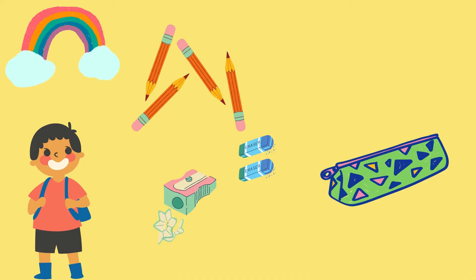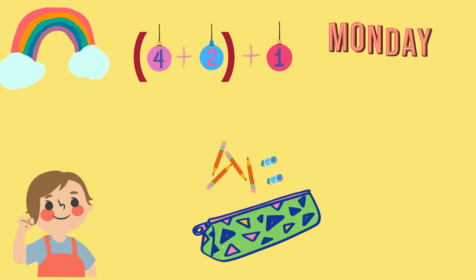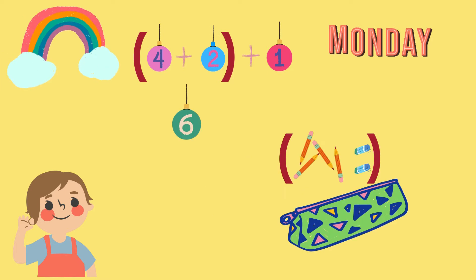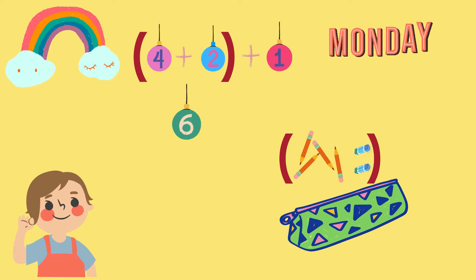Our buddy Alex usually carries four pencils, two erasers, and one sharpener in his pencil pouch. He was packing for school on Monday. He found his pencils and erasers first, so he put them in the pouch. Now he has six items in his pouch — four pencils plus two erasers equals six.